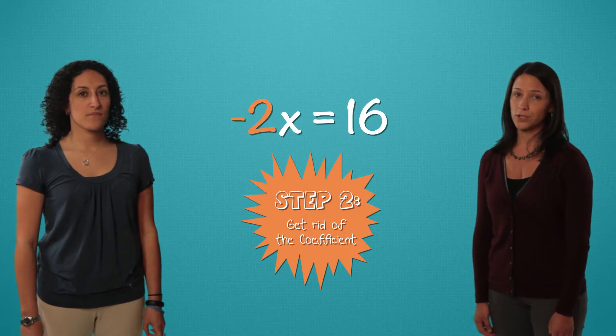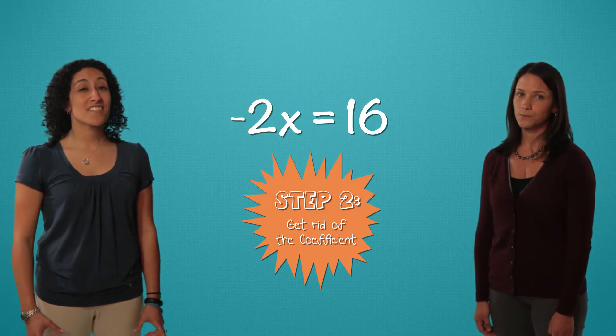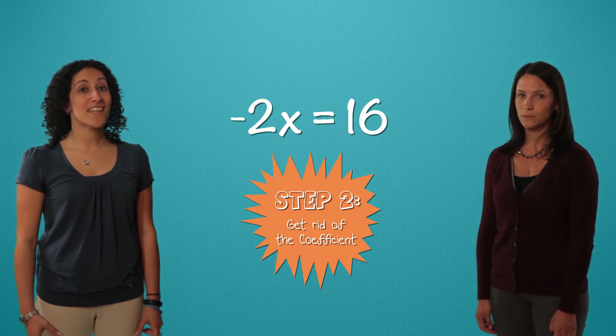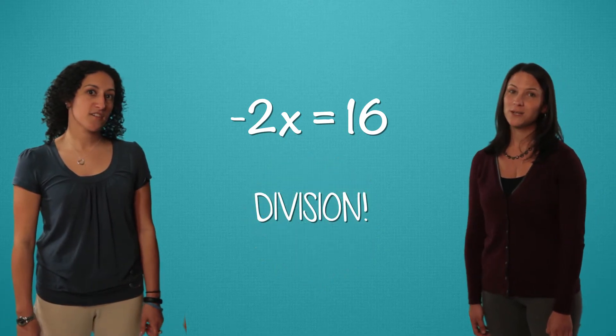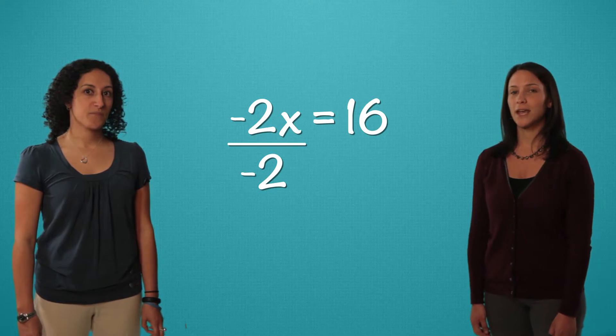Now we want to get rid of the coefficient, so x stands alone. This negative 2x really means negative 2 times x. The opposite of multiplication is division. We divide by negative 2 on this side to cancel out negative 2.